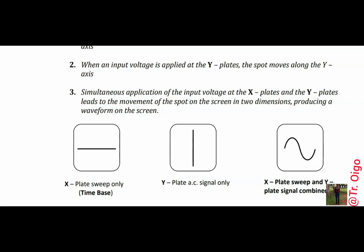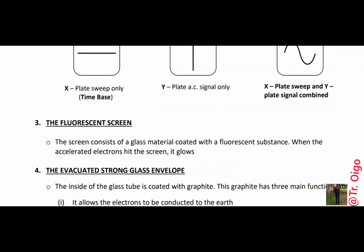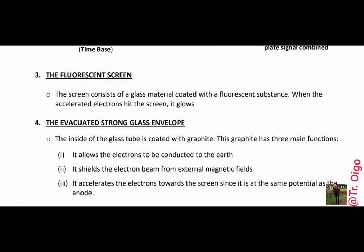That's how the deflection system works. The last part is the fluorescent screen. The screen consists of a glass material coated with a fluorescent substance, so that when an accelerated electron hits the screen, it glows. That is the function of the screen — it glows when struck by an accelerated electron. Then we have the evacuated glass envelope.